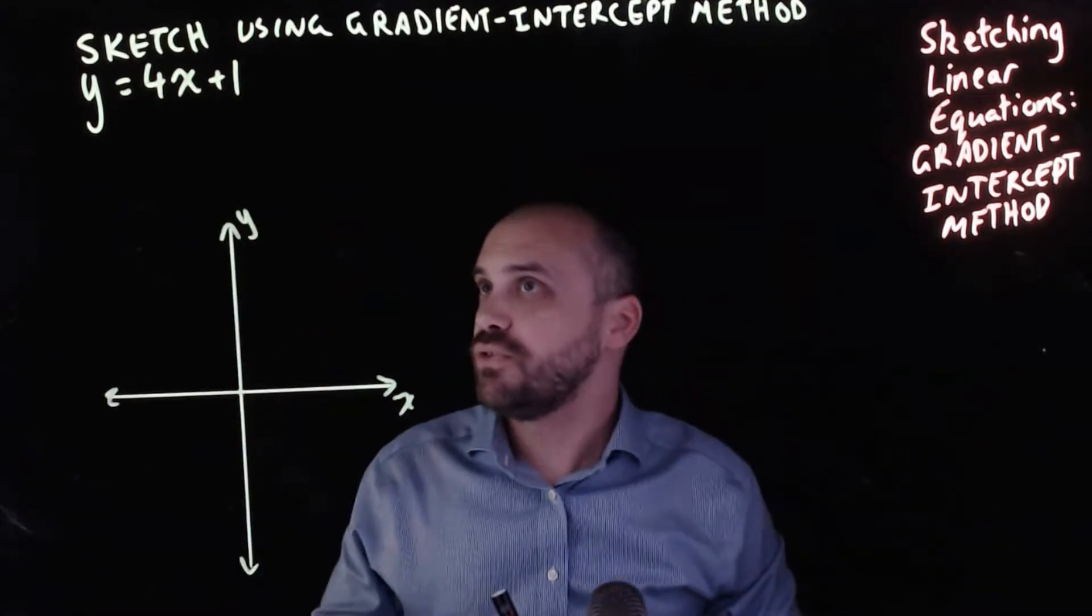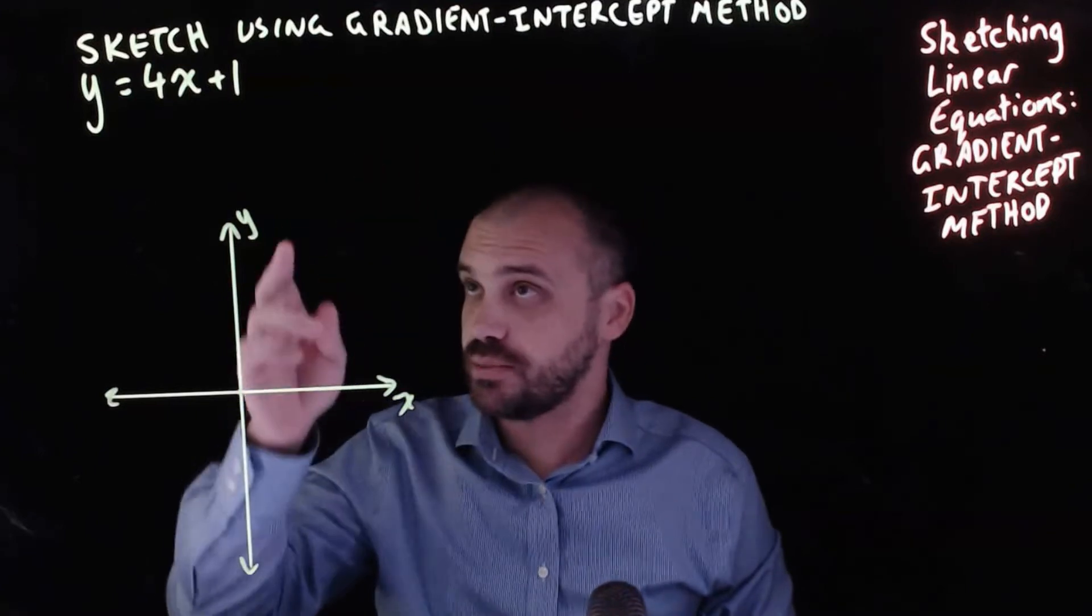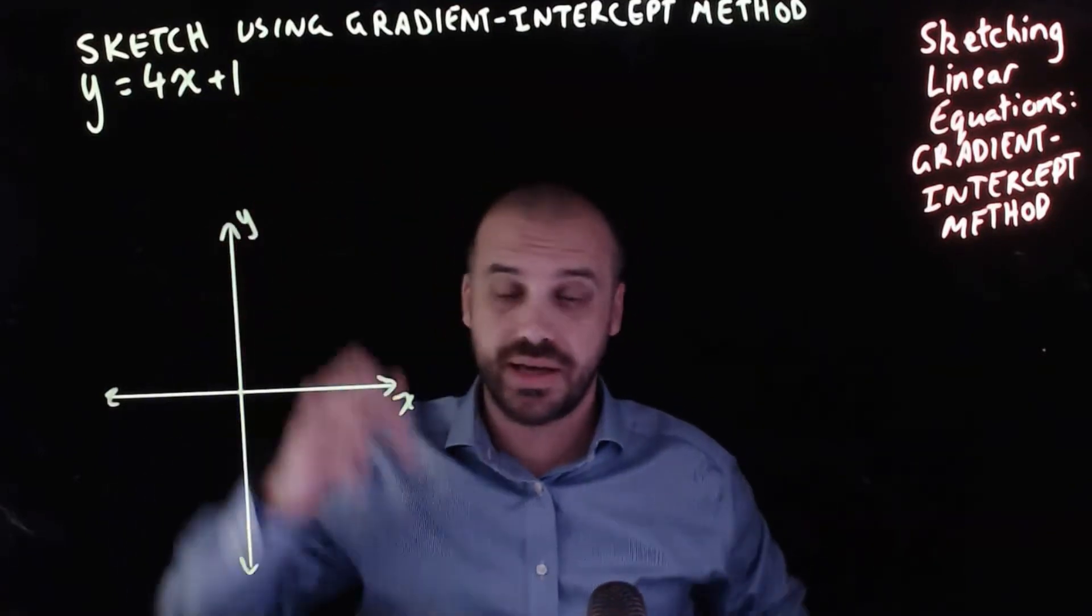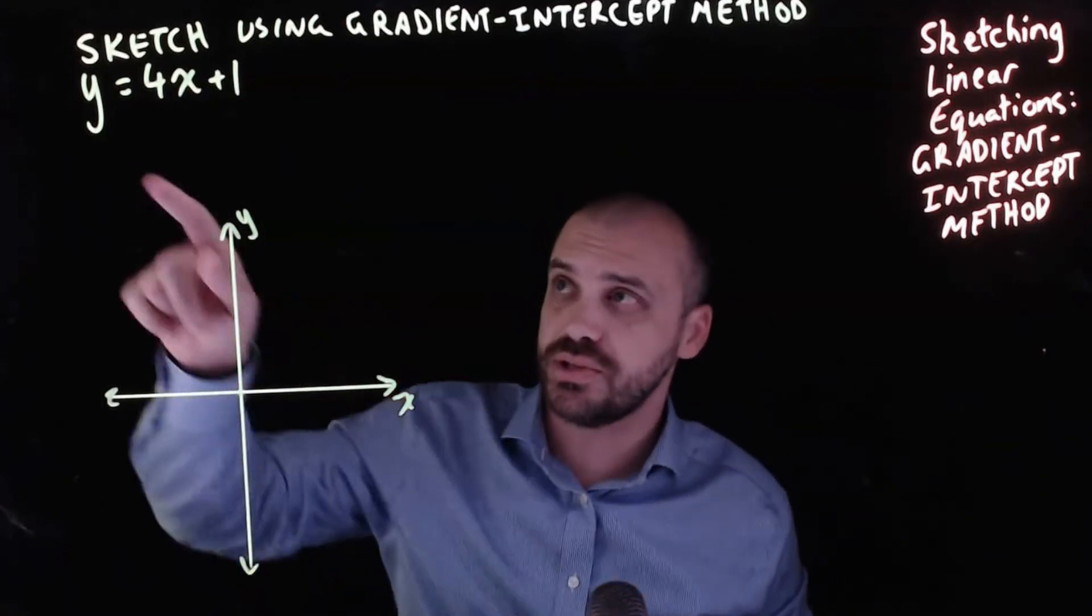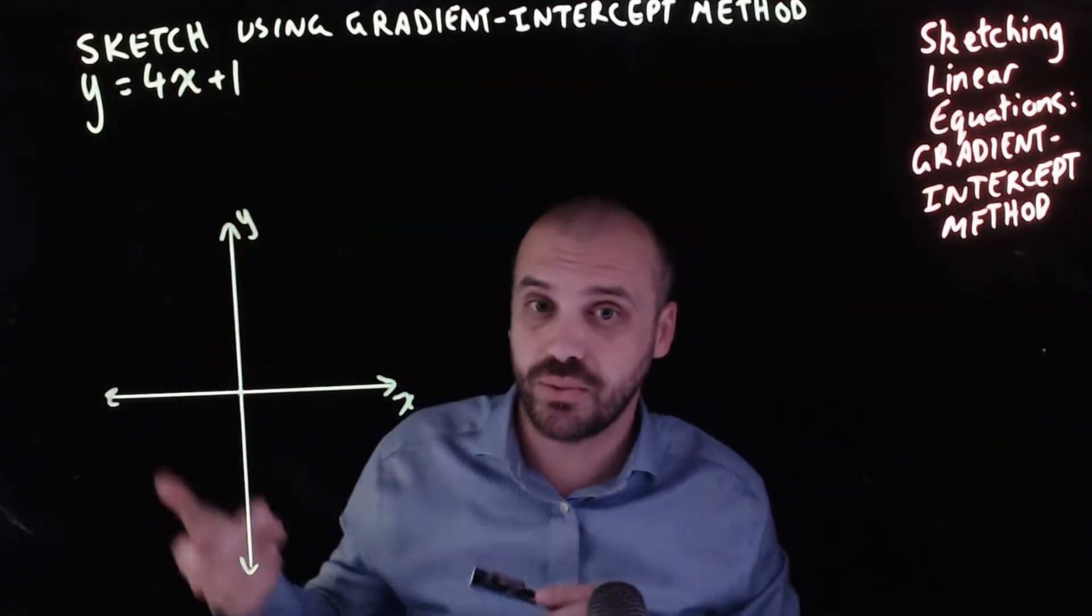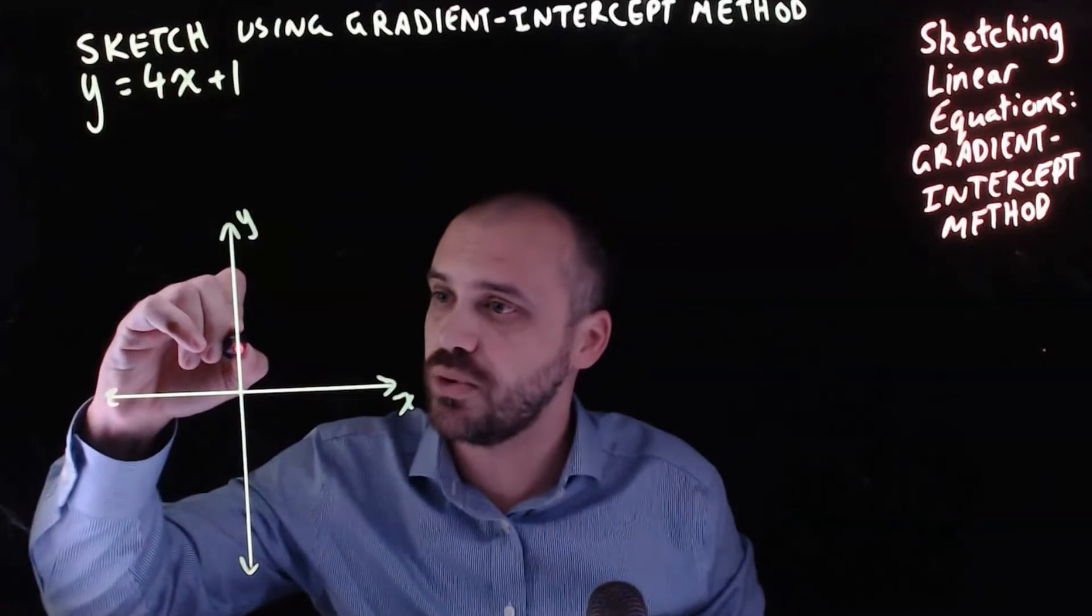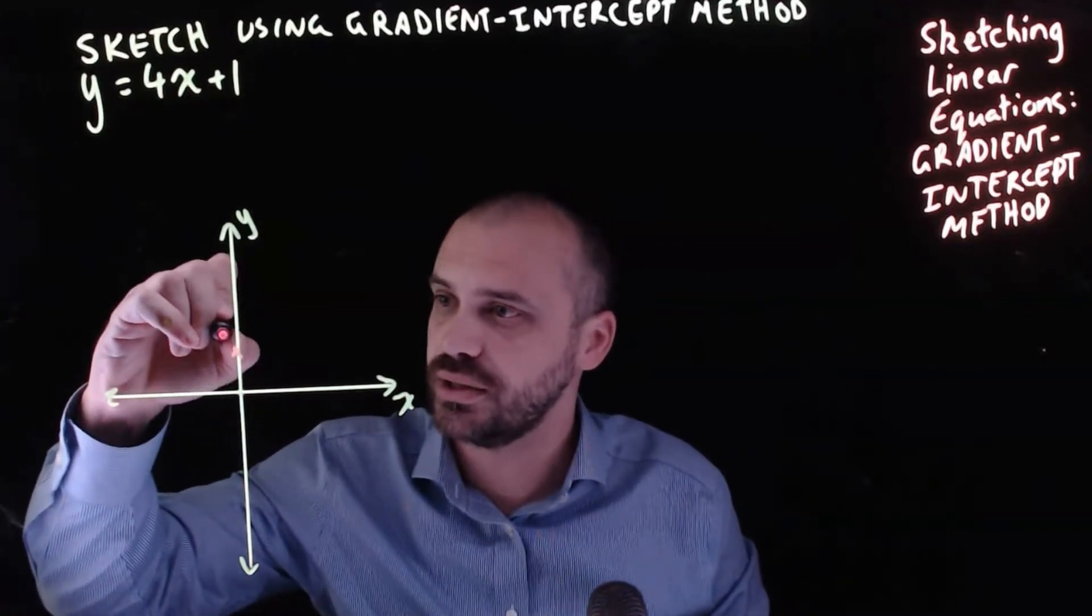All right, so first thing we're going to do is look for what's called the y-intercept. So the y-intercept here is our number 1. You could have also subbed x equals 0 into this equation and found the y-intercept, but in any case our y-intercept is 1.